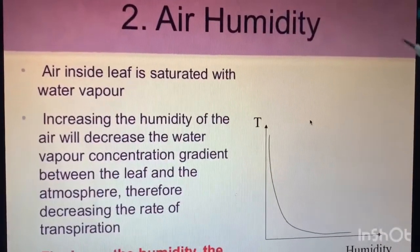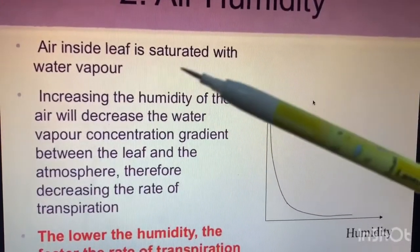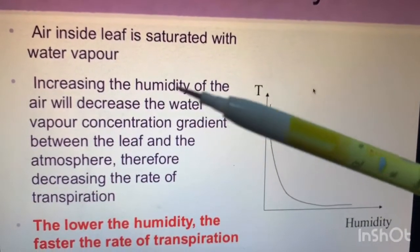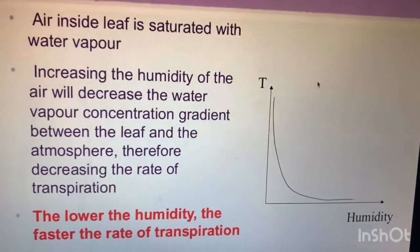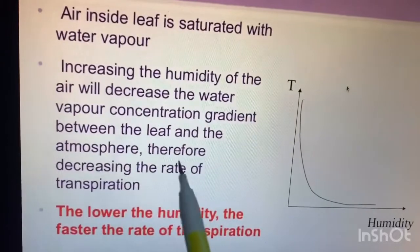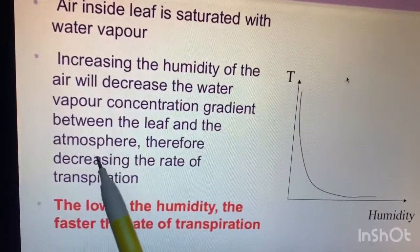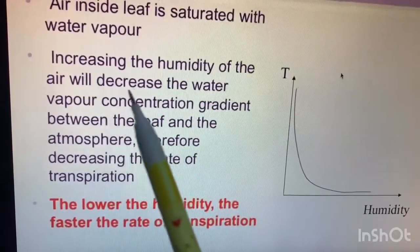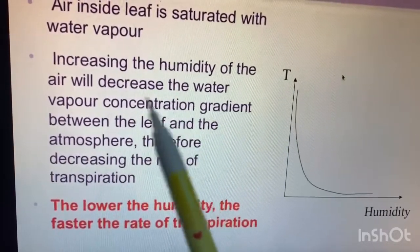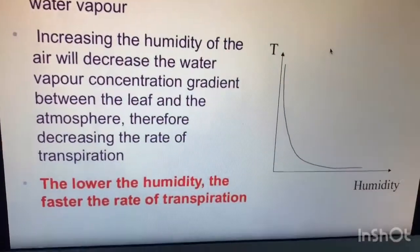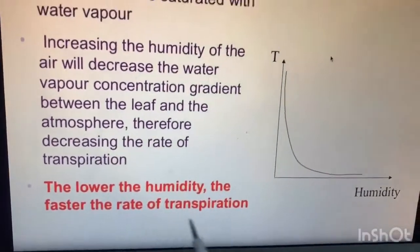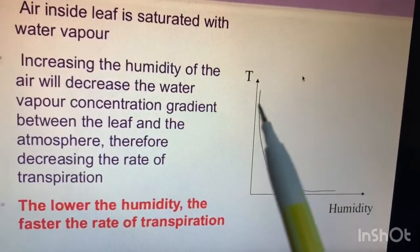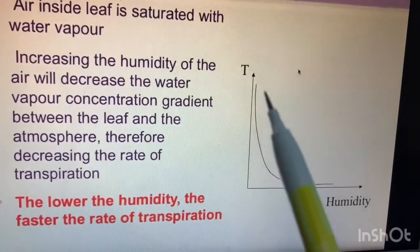Number two is air humidity. Air inside the leaf is saturated with water vapors. Increasing the humidity of the air will decrease the water vapor concentration gradient between the leaf and the atmosphere, therefore decreasing the rate of transpiration. Because of the increase in humidity, it decreases the water vapor concentration difference between the leaf and the atmosphere. The lower the humidity, the faster the rate of transpiration.